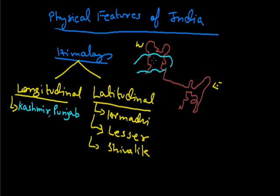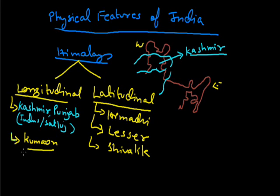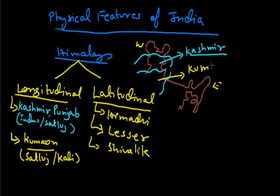This part of the Himalaya is called Kashmir Himalaya or the Punjab Himalaya, lying between the Indus and Sutlej rivers. The states that come in this first division are Jammu and Kashmir and Himachal Pradesh. The second division of Himalaya is in between river Sutlej and Kali, and this part is called the Kumaon Himalaya.